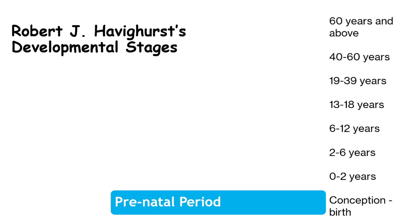This is the most rapid growth phase in human development. From a single cell, a fetus develops into a complete organism with all essential organs and functions. For instance, during this stage, a mother's prenatal care ensures that the fetus grows healthily, with regular checkups to monitor its development, including the heartbeat and limb movements. This foundation is crucial for the baby's future physical and cognitive capabilities.